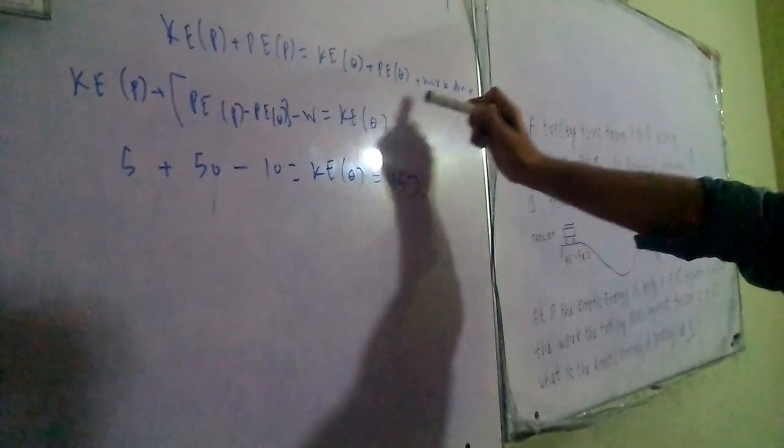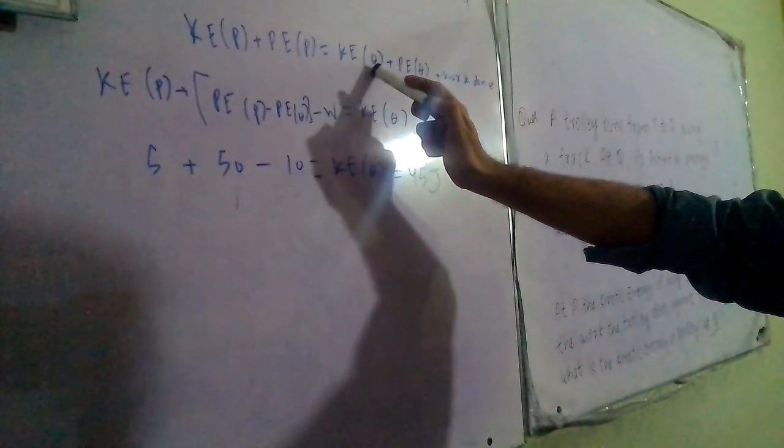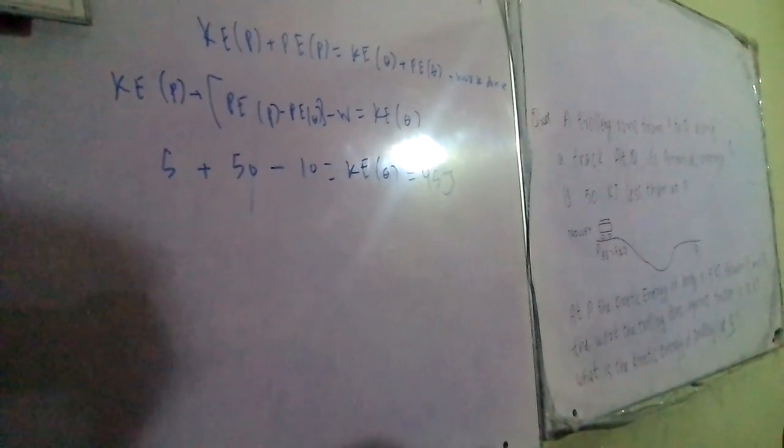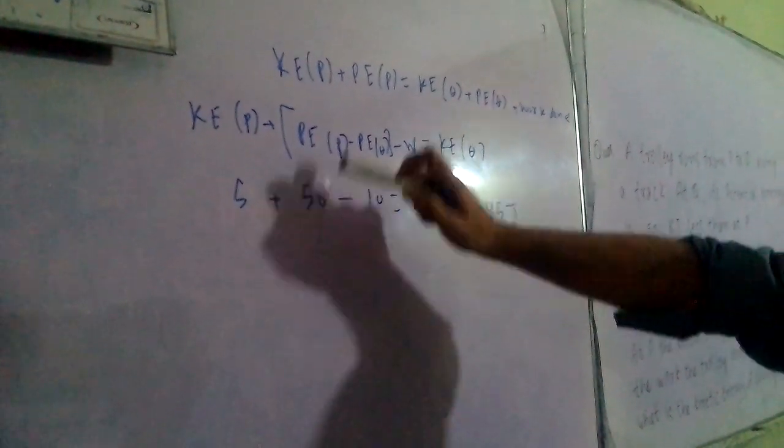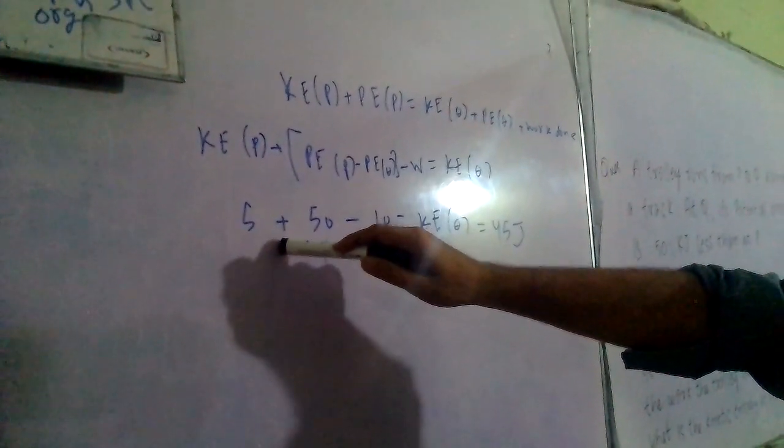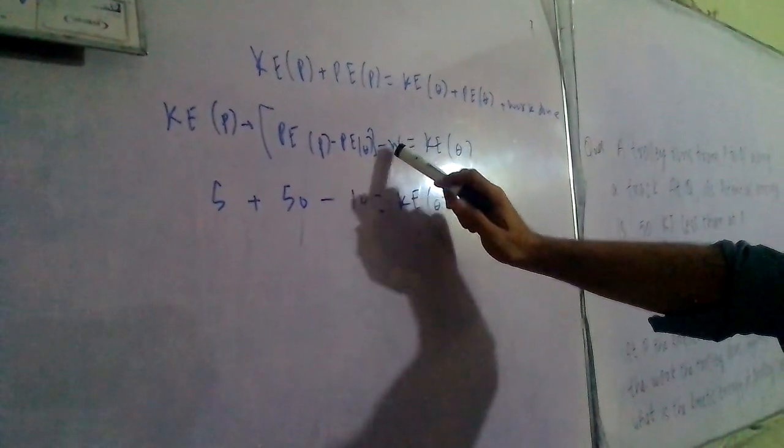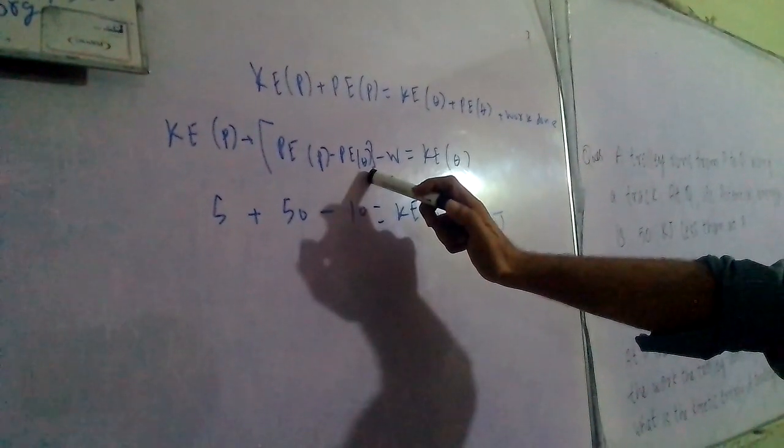Now, the work done is 10 kJ, which is the energy dissipated. The internal energy equals 2 kJ. So, the potential energy difference between P and Q...